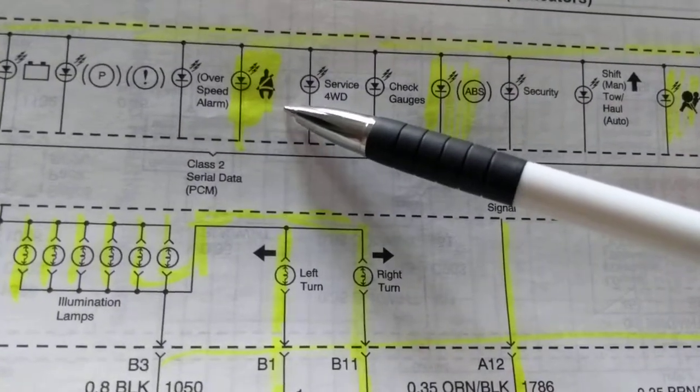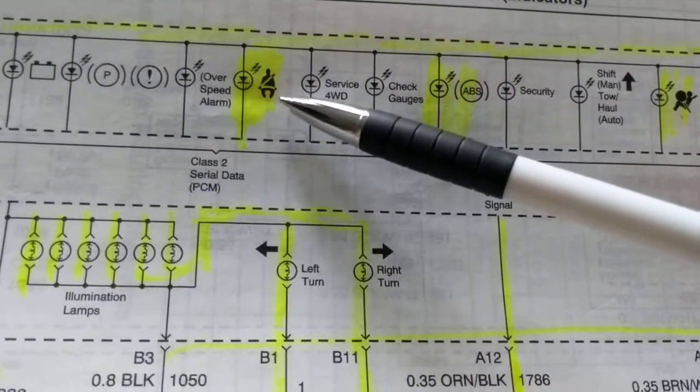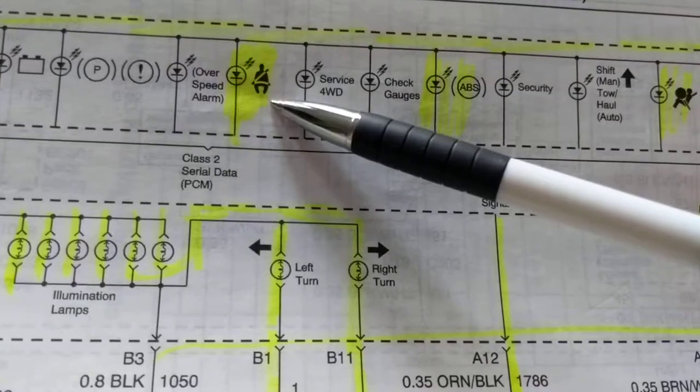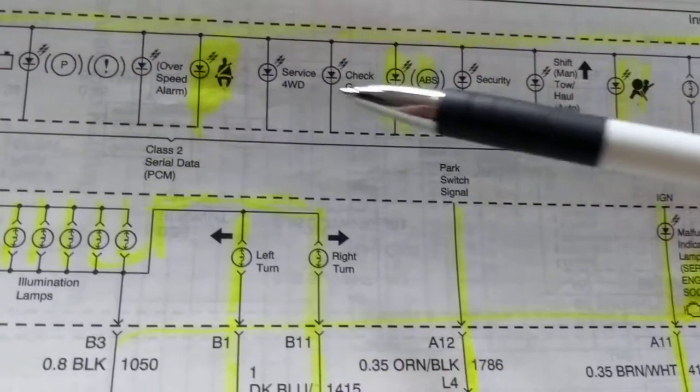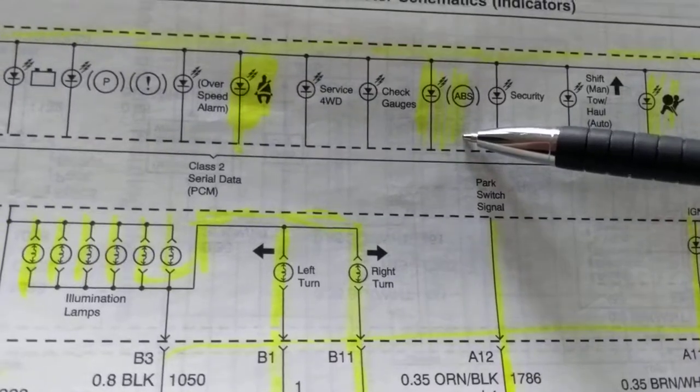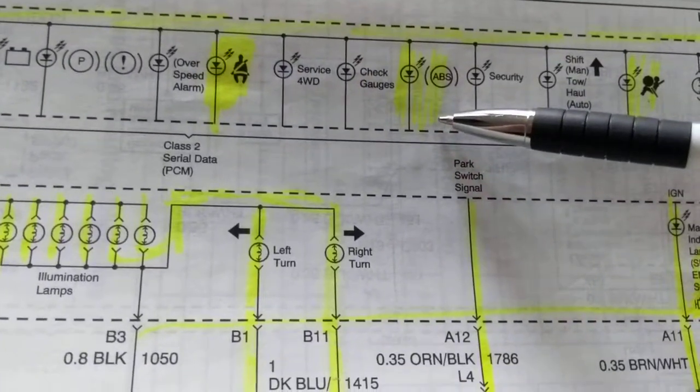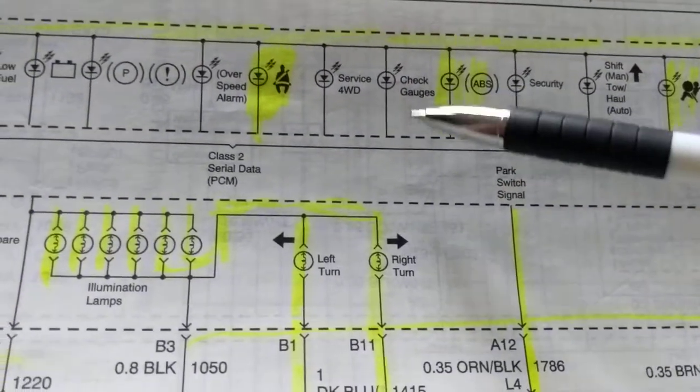So the seat belt is in red because it's very high priority, it's a safety issue. That's why it's in red. ABS is in red. That means anything with braking is very important, it's in red. The battery is in red.